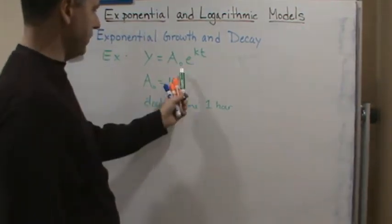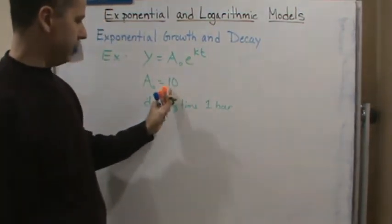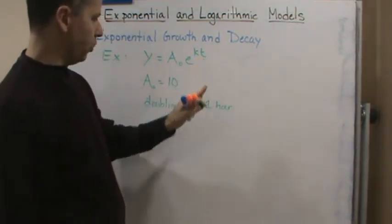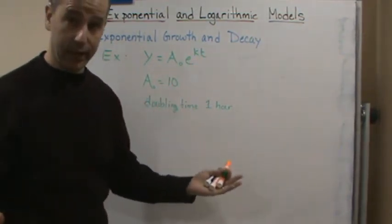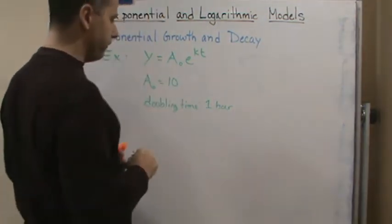What I'm going to do is just use this and the information that says at t equals zero I have 10, and then I know at t equals one I'm going to have double that amount, so that's 20. I'm going to use that information to find k.